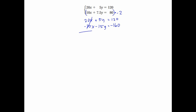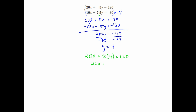So those x-terms cancel out. 5 minus 15 gives me negative 10y. 120 minus 160 gives me negative 40. Divide by negative 10 on both sides, so y equals 4. Once you get one variable, you plug it back in. I don't like working with decimals, so I'll plug into the first equation: 20x plus 5 times 4 equals 120. So 20x plus 20 equals 120. Subtract 20 on both sides, we get 20x equals 100. Divide by 20, so x equals 5.